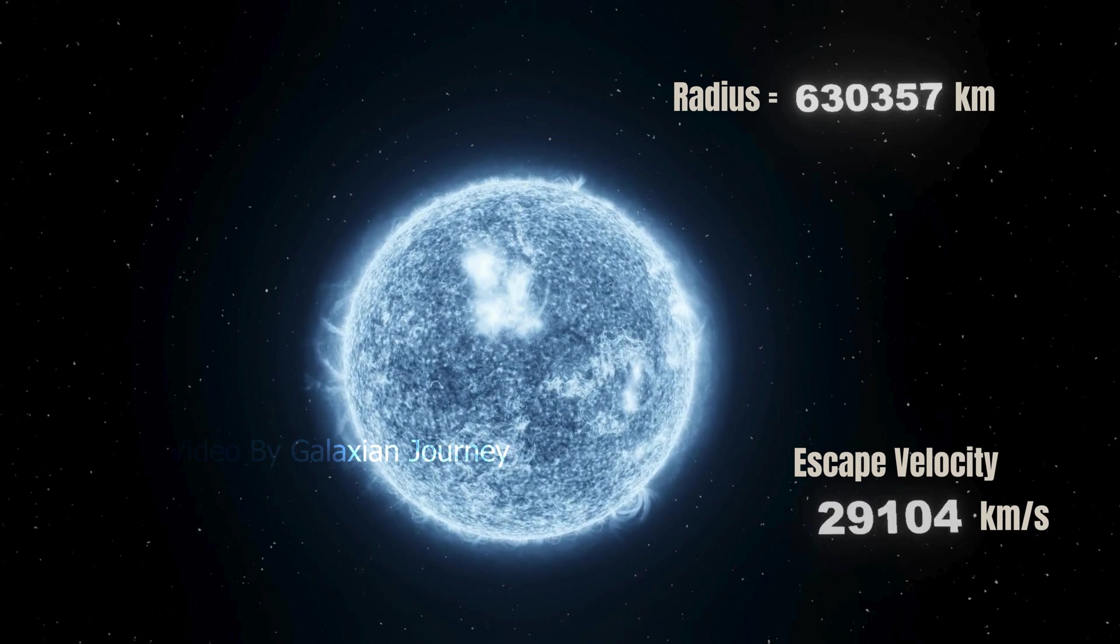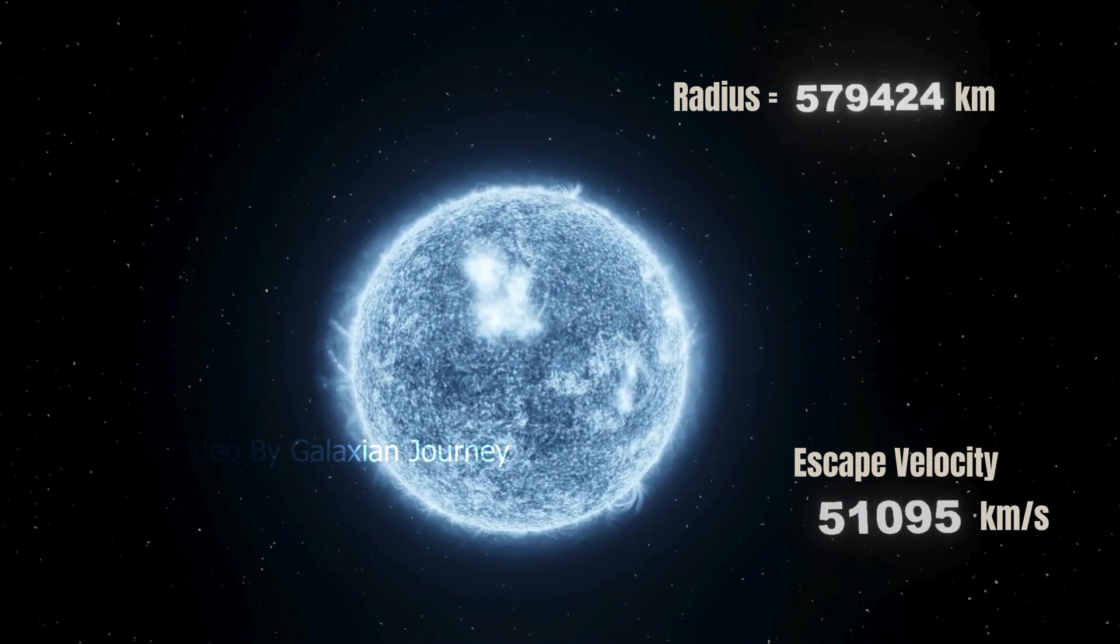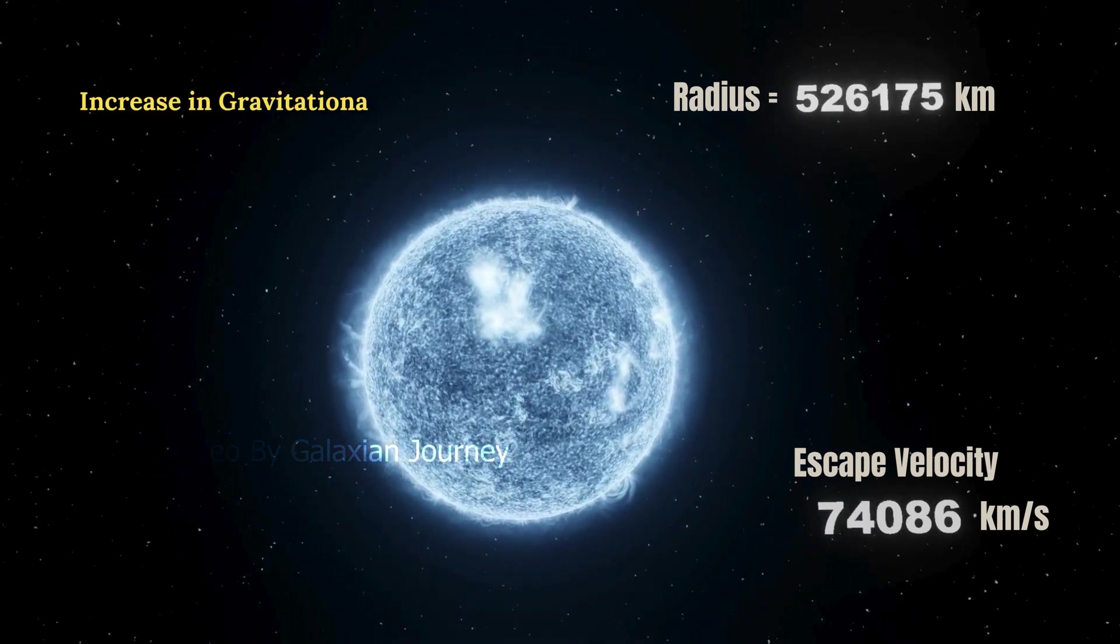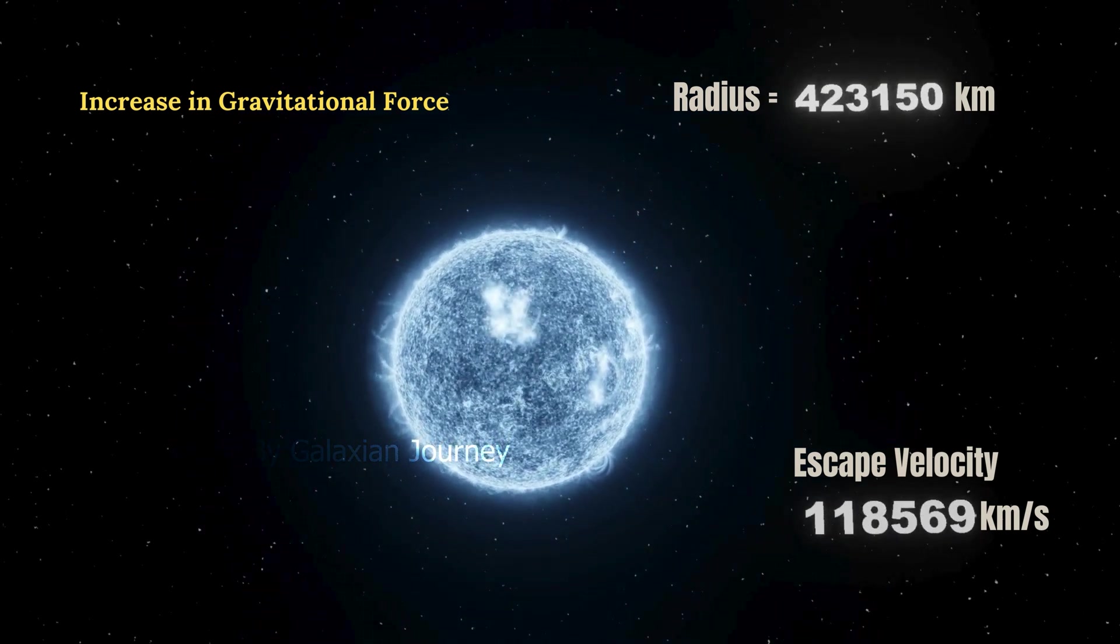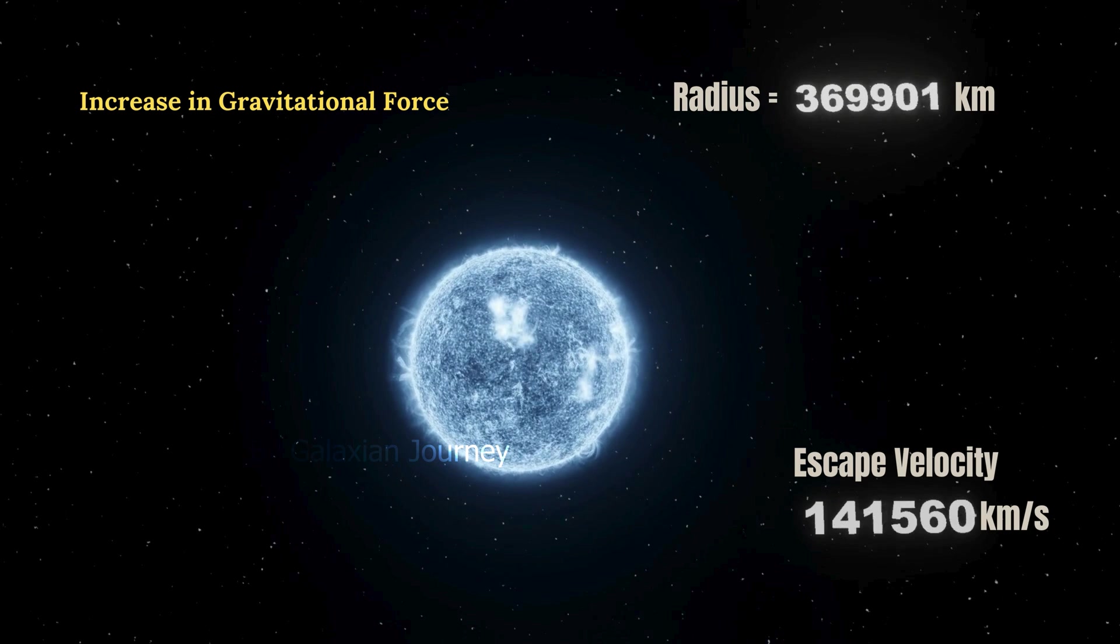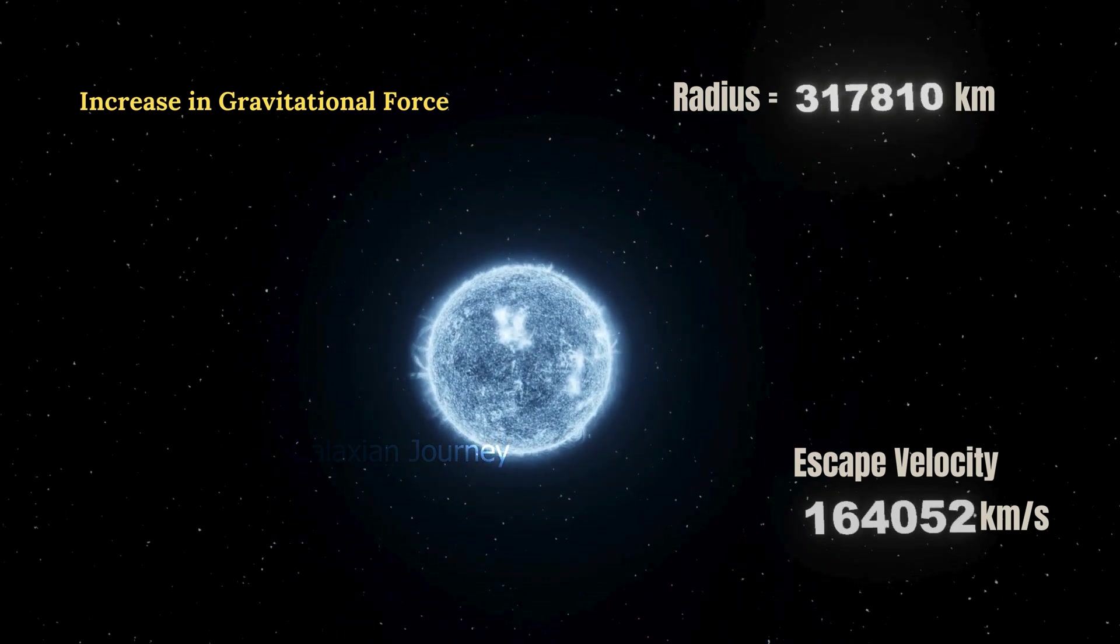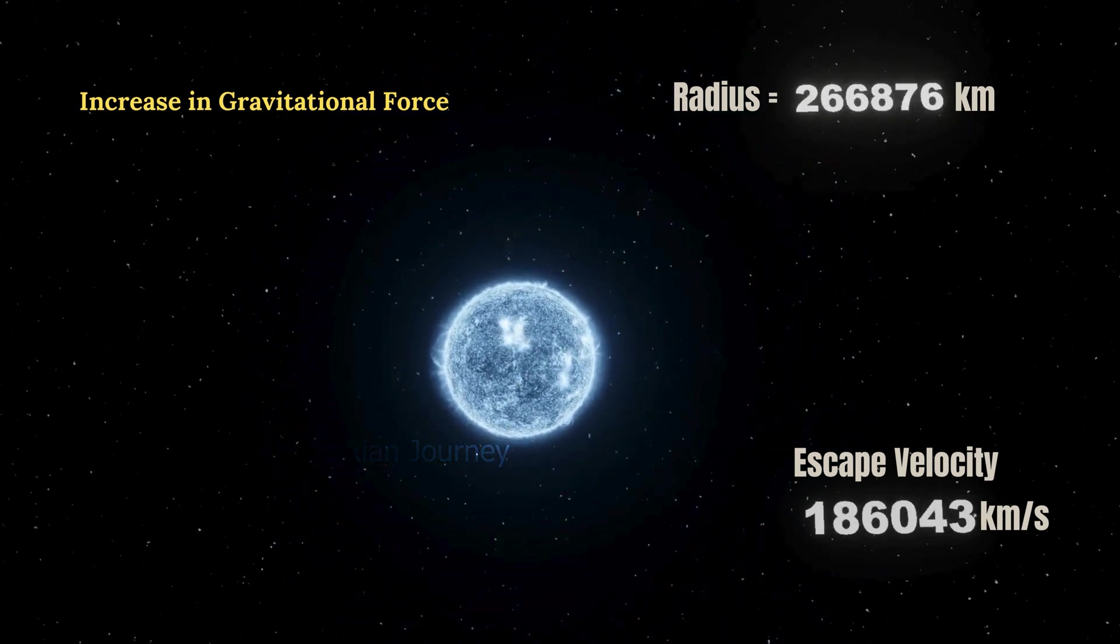Now, picture a star collapsing to a smaller radius while maintaining a constant mass. The gravitational force experiences a sharp increase due to the reduced radius. Consequently, this intensified force enables the star to consume even large celestial objects.